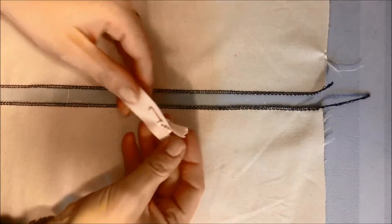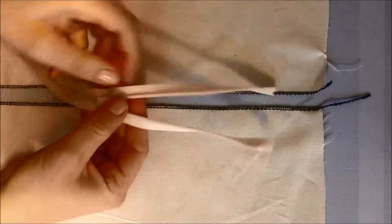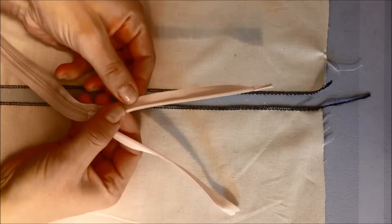Start by overlocking the sides. You always sew in an invisible zipper when it's open because of the construction of the zipper.